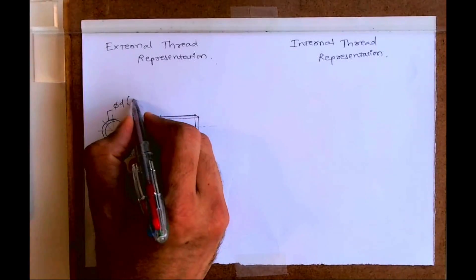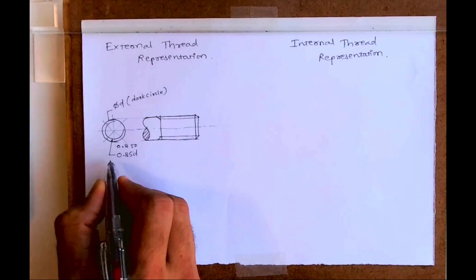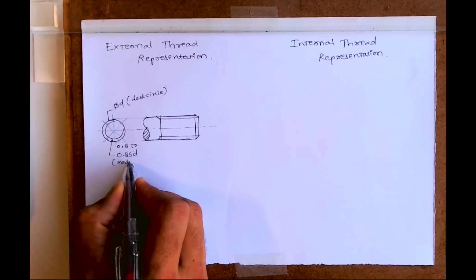In external thread, the outside circle will be dark and the inner circle, that three-fourth circle, would be medium dark.